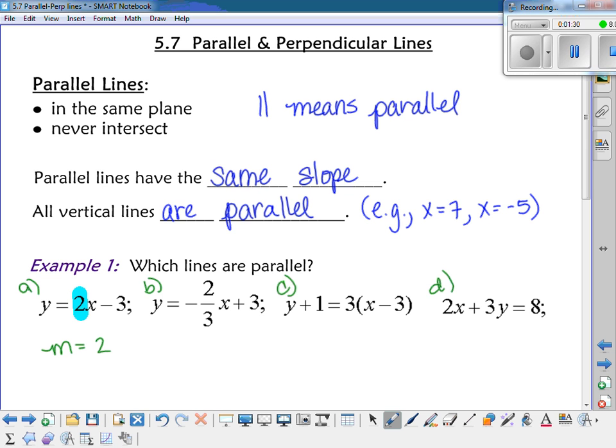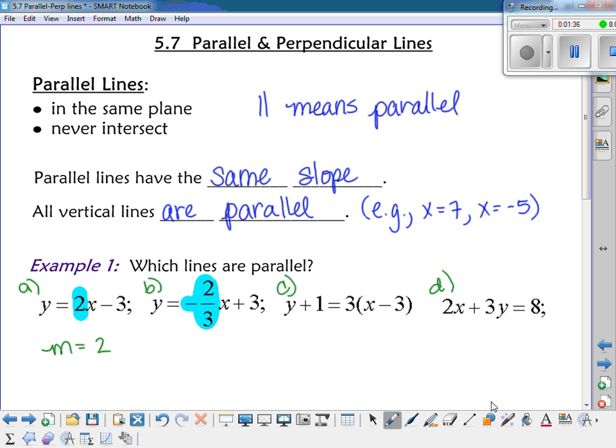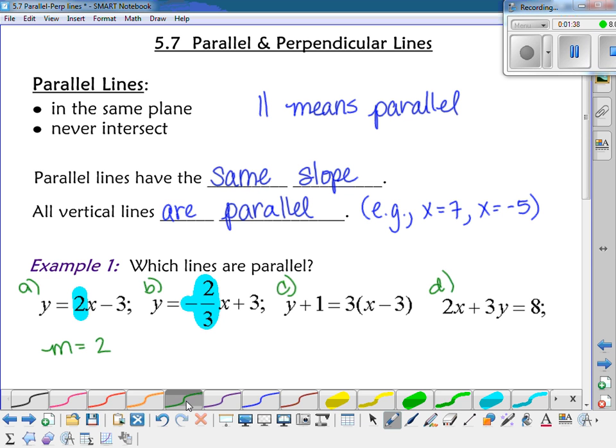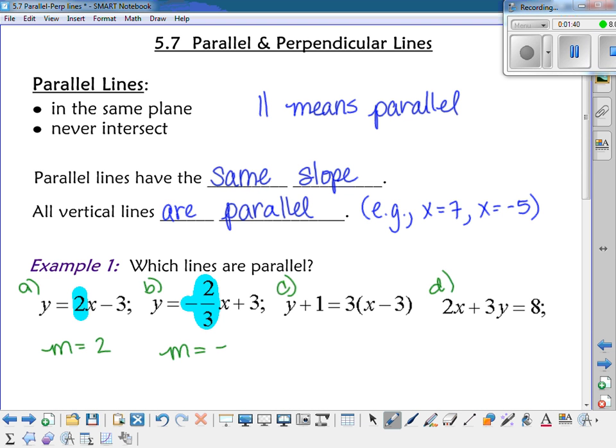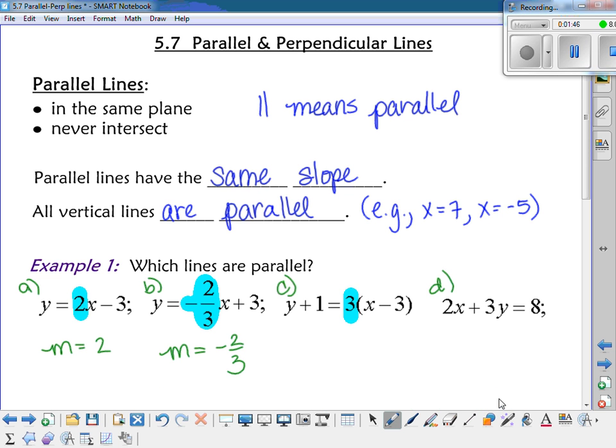Okay, if I look at example B, the slope of that line is negative 2 thirds. Okay, can we see what the slope of line C is? It's 3. So, so far none of them are the same. So I'm guessing that D is going to be the one that's like some of them.